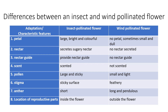Regarding the anther: in the insect-pollinated flower the anther is short, while in the wind-pollinated flower it is long and pendulous. Lastly, regarding the location of the reproductive parts: in the insect-pollinated flower the stamen and carpel are located inside the flower, encased within its petals, while in the wind-pollinated flower these are located outside.